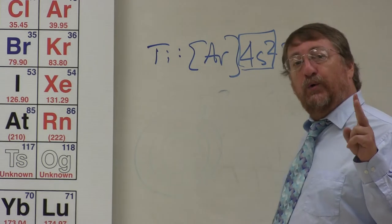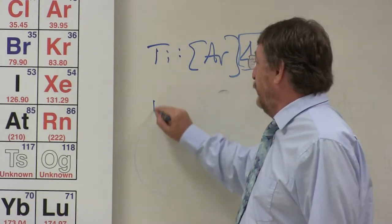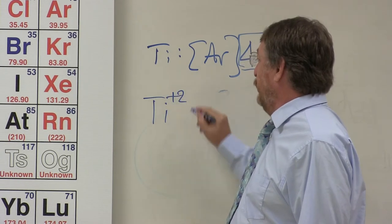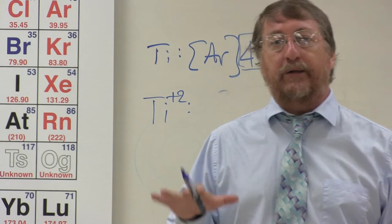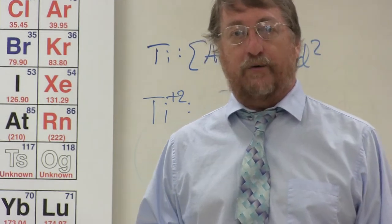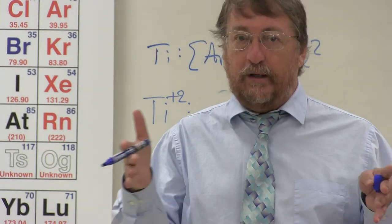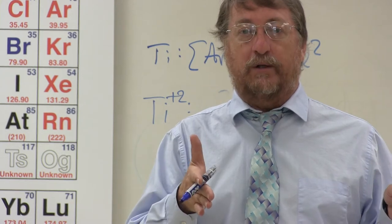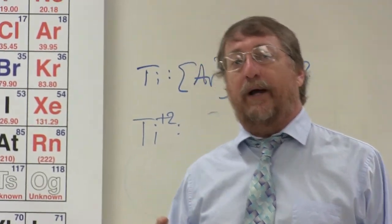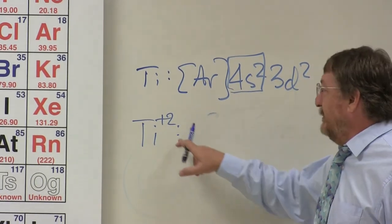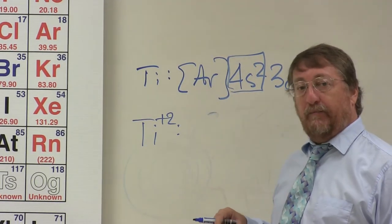So titanium likes to create two different ions. The first is titanium plus two. Now when you do the electron configuration of ions, always write out the normal element first. Don't follow an electron configuration in order of fewer electrons. Write out the normal electron configuration and then take away.